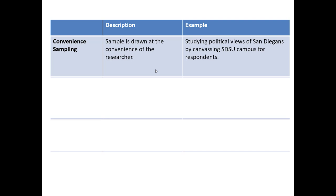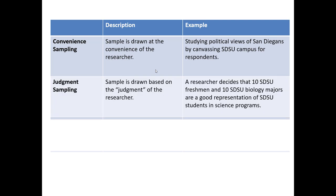For example, if we wanted to study the political views of all San Diegans, and to do so we canvassed the SDSU campus for respondents because it was convenient and easy for us, that would be an example of convenience sampling.